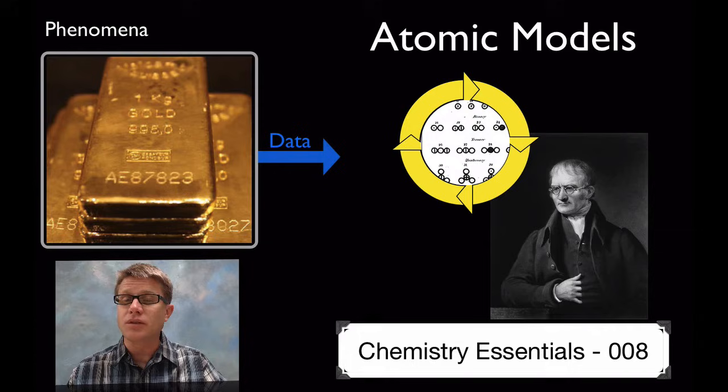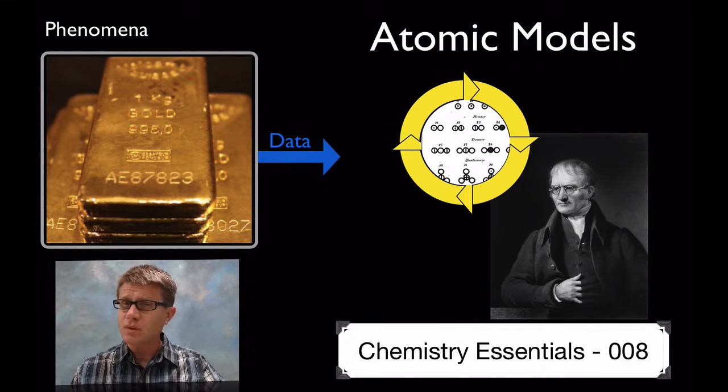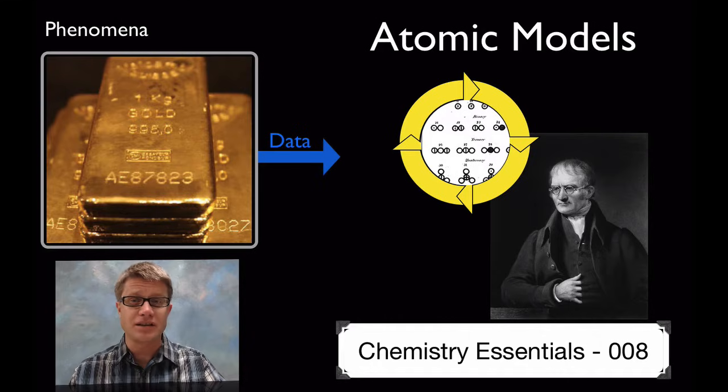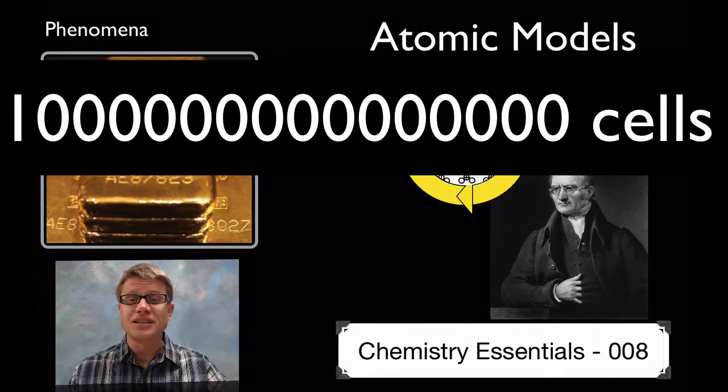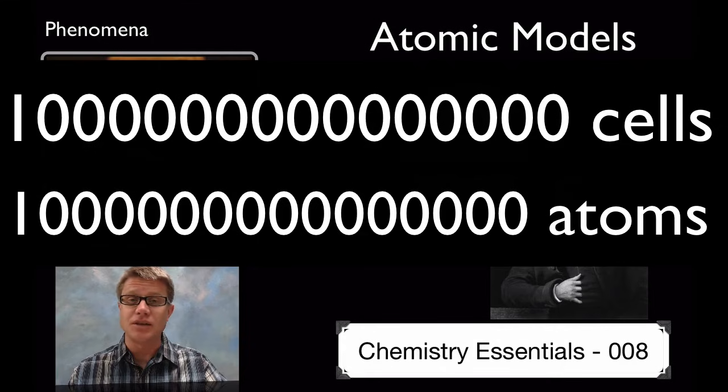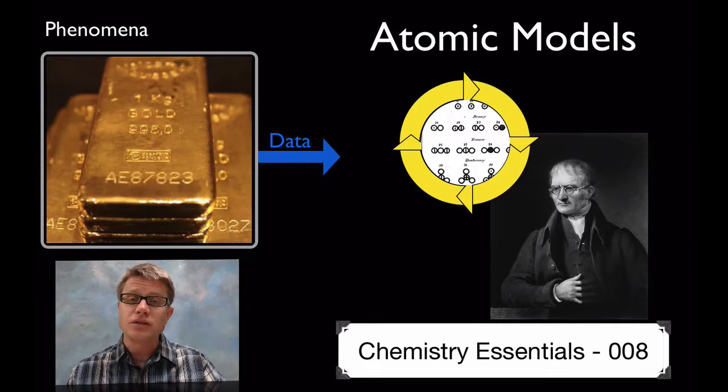And so if we look at the atom, atom is very similar. Atoms are so small. I think in a human body we have 10 to the 14th cells. And then if we look inside the cells we have 10 to the 14th atoms in every cell. And so it's incomprehensible how small atoms are and how many of them we have.